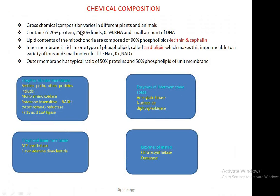Chemically, mitochondria comprise, varying in different plants and animals: 65 to 75 percent proteins, 25 to 30 percent lipids, 0.5 percent RNA, and small amounts of DNA. The lipid contents of the mitochondria are composed of 90 percent phospholipids like lecithin. The inner membrane is rich in one type of phospholipid called cardiolipin, which is a very important component of the inner membrane.